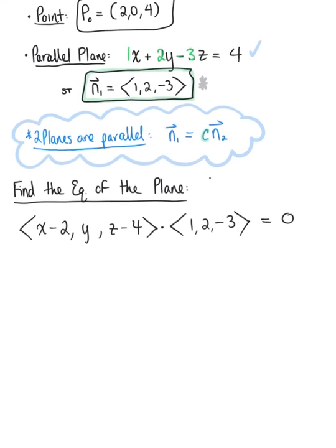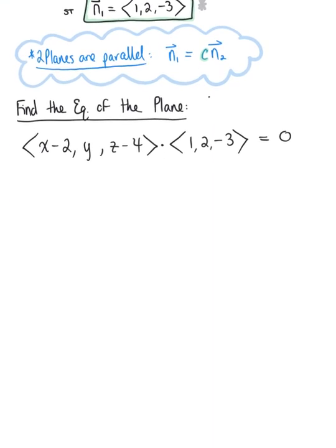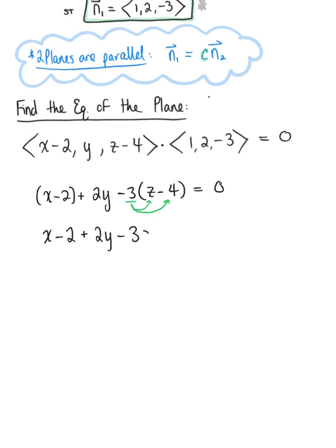By definition of the dot product, this gives us 1 times (x minus 2) plus 2 times (y minus 0) minus 3 times (z minus 4) equals 0. We distribute the negative 3, leaving us with x minus 2 plus 2y minus 3z plus 12 equals 0. Combining the constants — minus 2 plus 12 gives us 10 — the equation of the new plane is x plus 2y minus 3z equals negative 10.